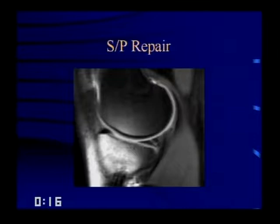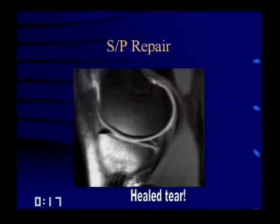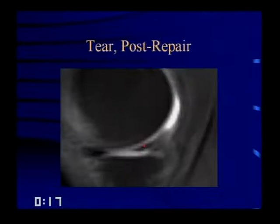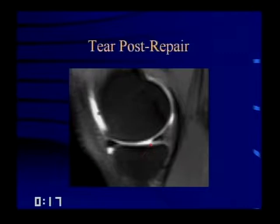Here's a case we thought was a recurrent meniscal tear — it looks bright, possibly gadolinium going in — but it was just a healed tear. Here's another: a tear pre-repair and post-repair shows a little signal going up and then a pixelated image showing gadolinium barely entering the posterior horn. Additionally, truncation of the triangle of the posterior horn represented not only a tear that hadn't healed but a new radial tear as well.